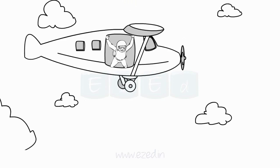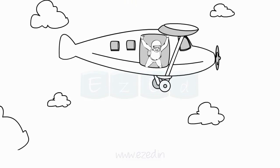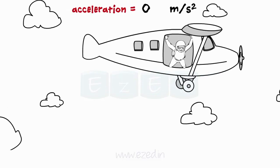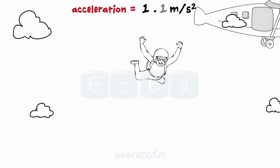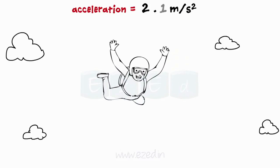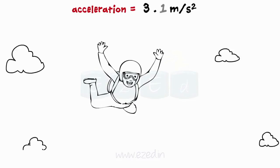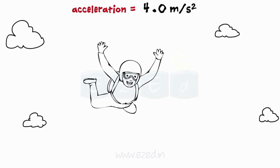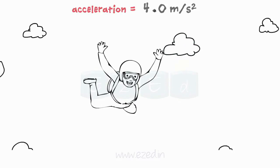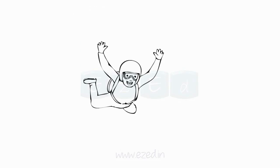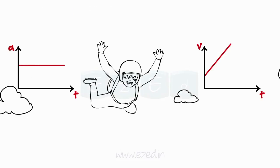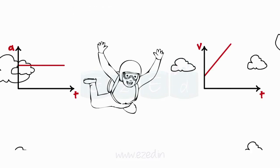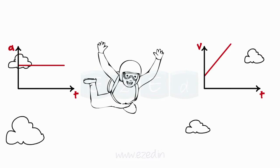What is uniform acceleration? Let us take an example of a man jumping from an airplane. His acceleration is zero before the jump. As he jumps, his acceleration increases at a uniform rate. He will have uniform acceleration motion only if his velocity increases simultaneously at a uniform rate. So if the velocity of a particle is increasing at a uniform rate, then its acceleration will be constant throughout the period of time.